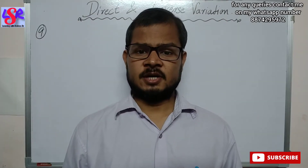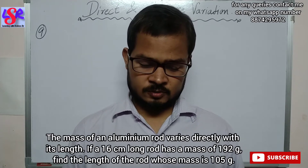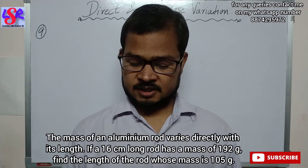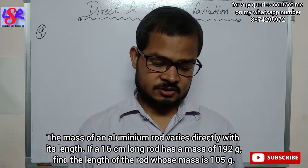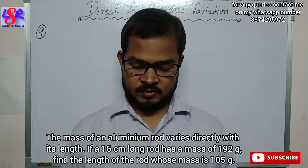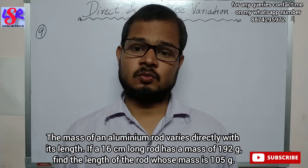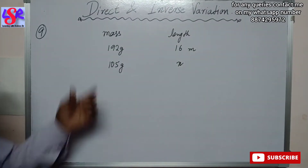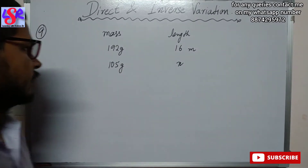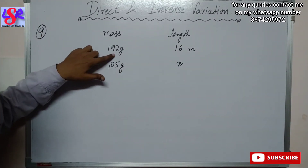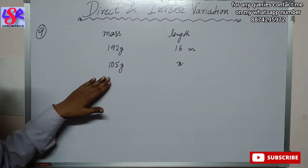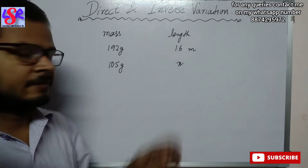Now let's see question number 9. In this question, the mass of an aluminum rod varies directly with its length. If a 16 centimeter long rod has a mass of 192 gram, find the length of the rod whose mass is 105 gram. Here we are having the mass and the length of the aluminum rod. When the mass was 192 gram the length is 16 centimeter, and if the mass is 105 gram we have to find the length.